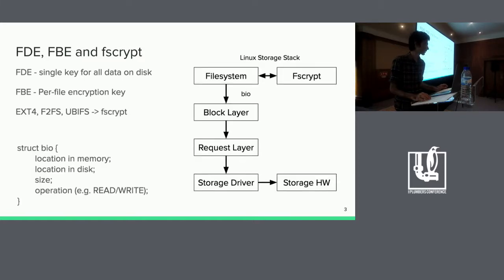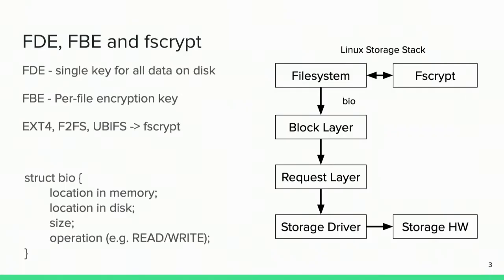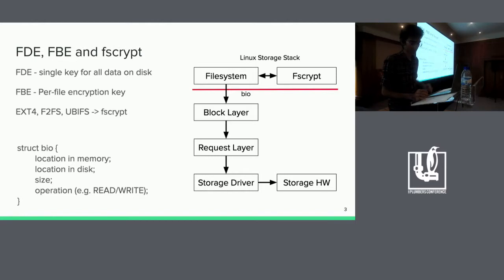So in the Linux storage stack, struct bios are basically the unit of data transfer. They describe a location in memory to read from or write to, a location on the block device to write to or read from, a size, and the type of operation — for example, a read or write. When file systems want to write an encrypted file, they construct one or many struct bios and encrypt the data in these bios by calling into FSCrypt with the encryption context, and submit the bios to the block layer. The bio goes down the stack and data will eventually be written by a storage driver to the storage hardware. When file systems want to read an encrypted file, they construct struct bios, submit them to the block layer first, and when the read is completed and the bio comes back to the file system, the file system calls into FSCrypt with the encryption context to decrypt the data. Note that the encryption context is only needed above the block layer — only FSCrypt needs to know what the encryption context is for the data in a particular bio.